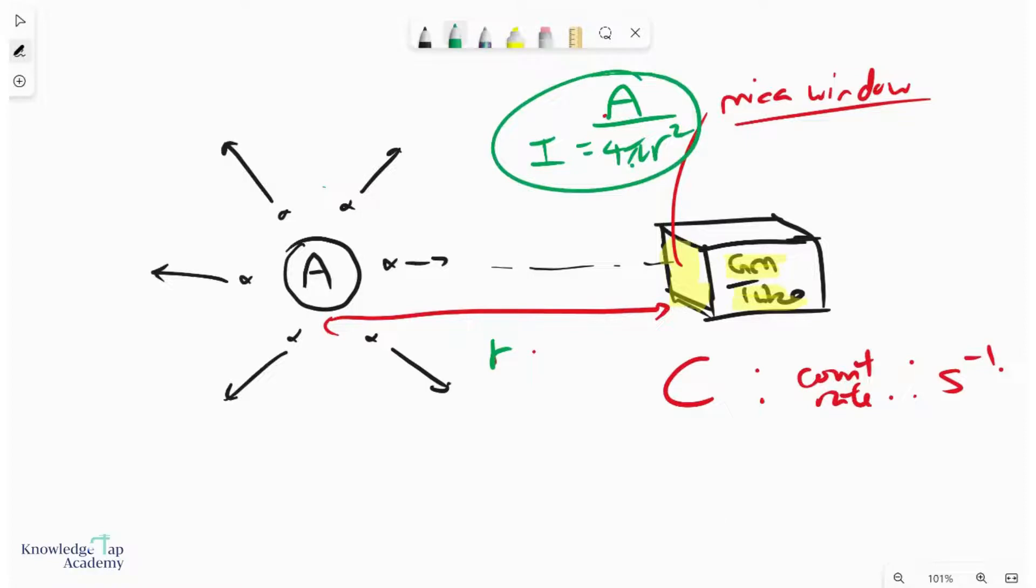This represents the activity per unit area. Therefore, if we know the area of the micro window, let's call it a small a, the count rate is simply that radioactive intensity multiplied by the small a.